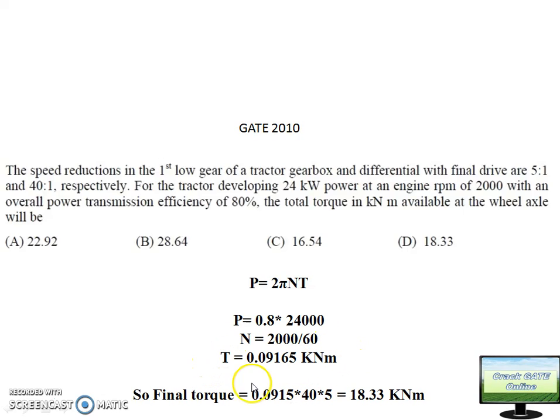From here we will calculate how much is the torque from the engine. We will put 24 into 0.8 upon 2π into 2000 upon 60. So we will get this torque value: 0.09165 kNm. This much torque engine is generating at the engine. But for the torque multiplication, there is transmission box, differential and final drive. So that will multiply the torque.